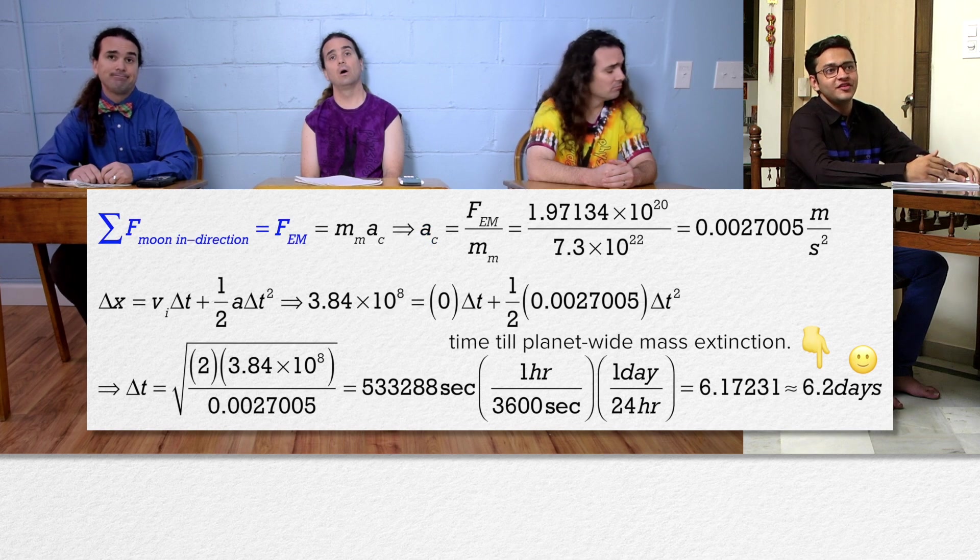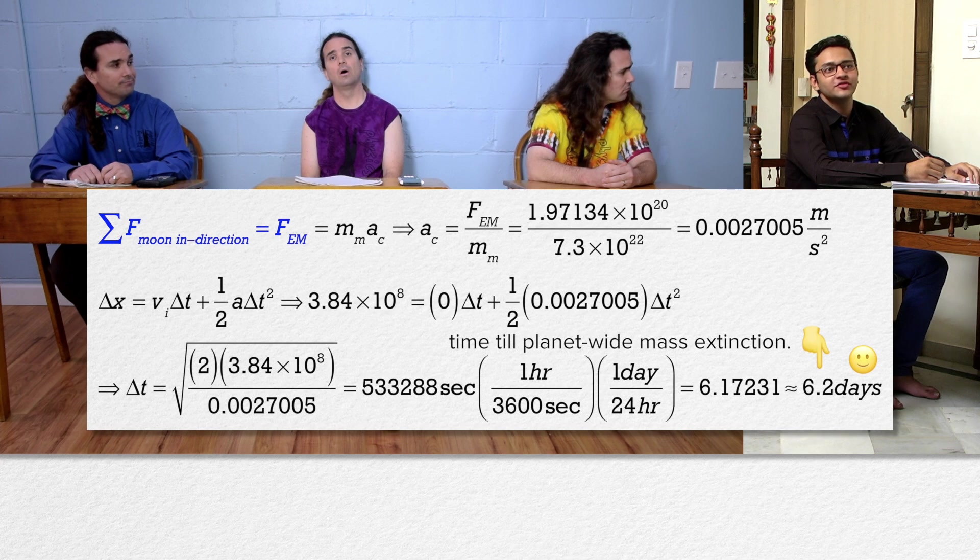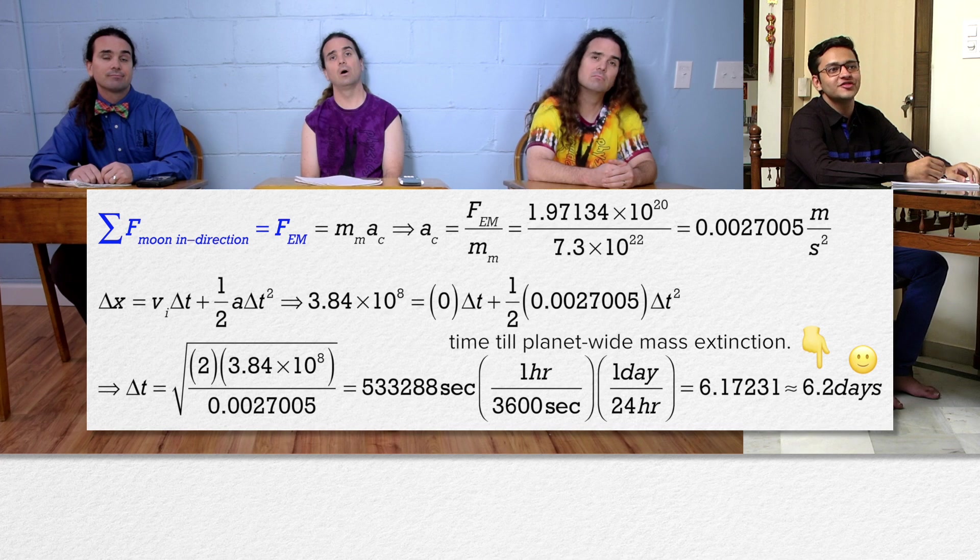The net force in the in-direction equals the force the Earth causes on the Moon. Therefore, the force the Earth causes on the Moon is the net force in the in-direction and is therefore the centripetal force which causes the Moon's orbit. I get it.